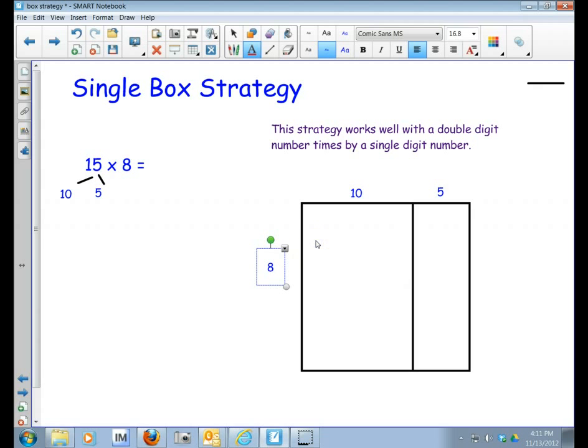So in this first box, I'm going to multiply the 8 and the 10. So let's do 8 times 10 and we know that equals 80. And then in this box I'm going to do the 8 times the 5. So 8 times 5 which equals 40.